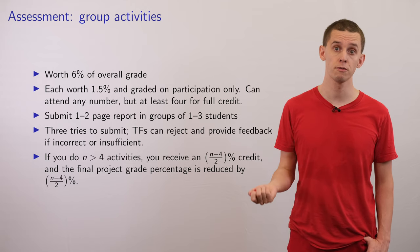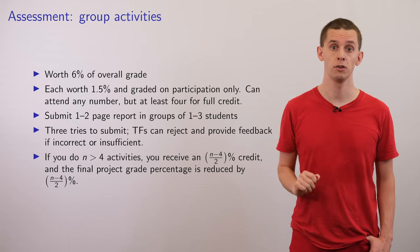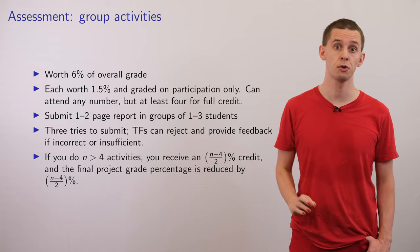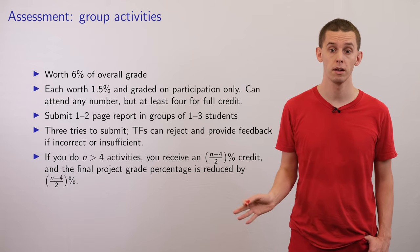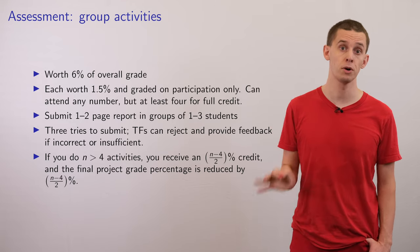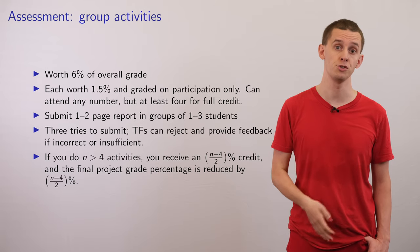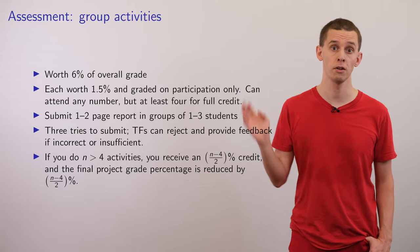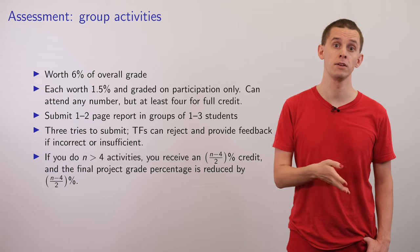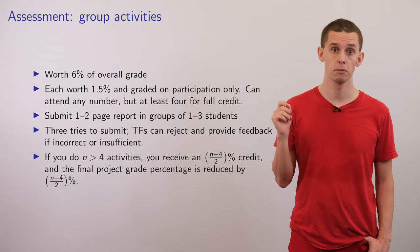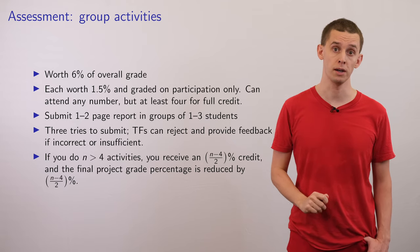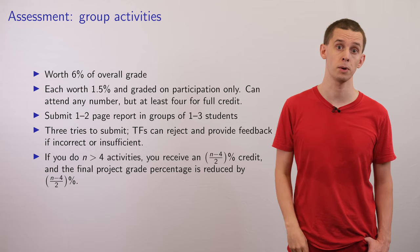There'll be a very minor incentive for attending more than four activities. So if you do N greater than four activities then you'll receive a N minus 4 divided by 2% credit and the final project grade percentage will correspondingly be reduced by that amount. So for every additional activity that you do, half a percent of the final project grade is guaranteed participation credit instead.